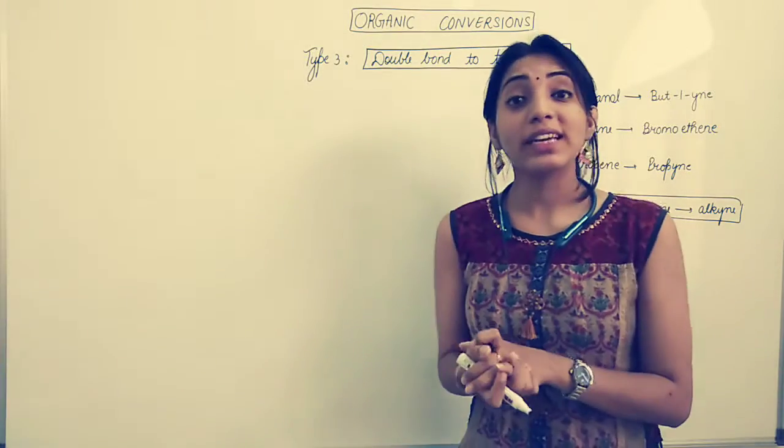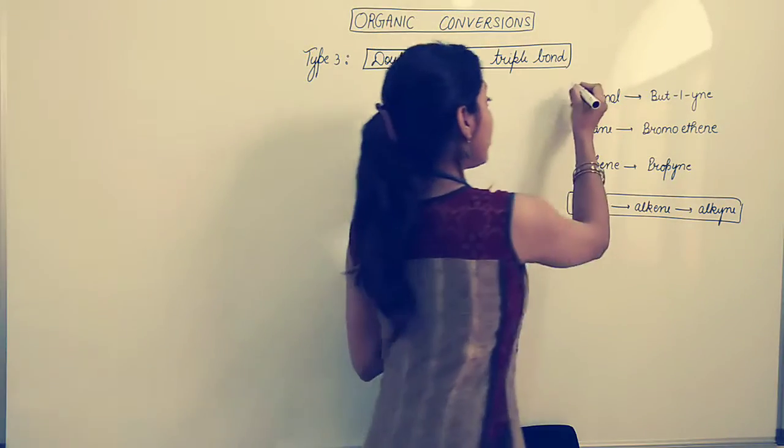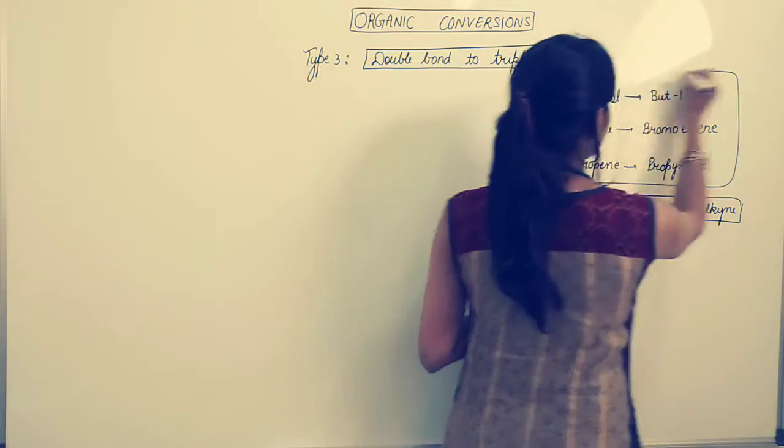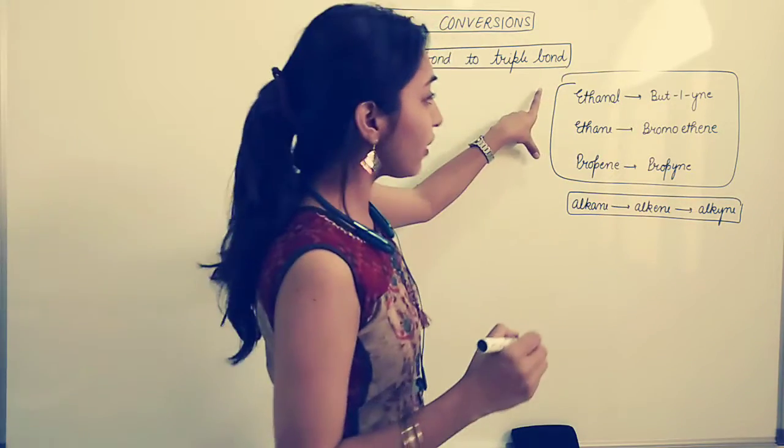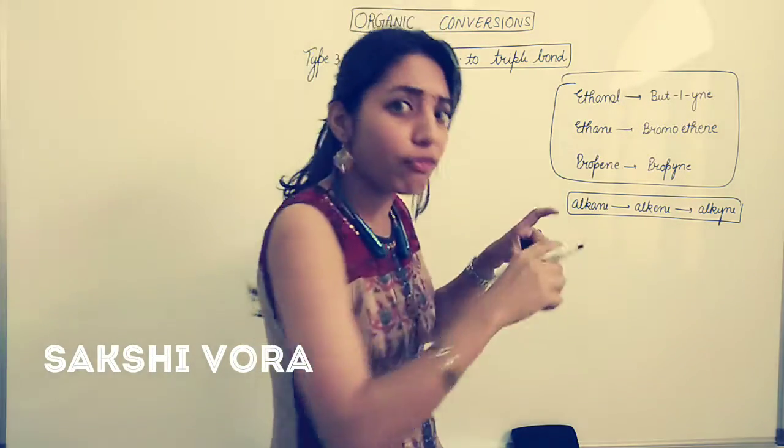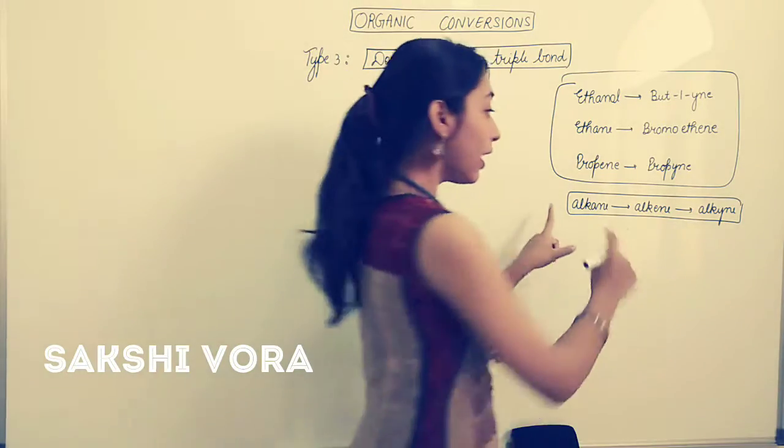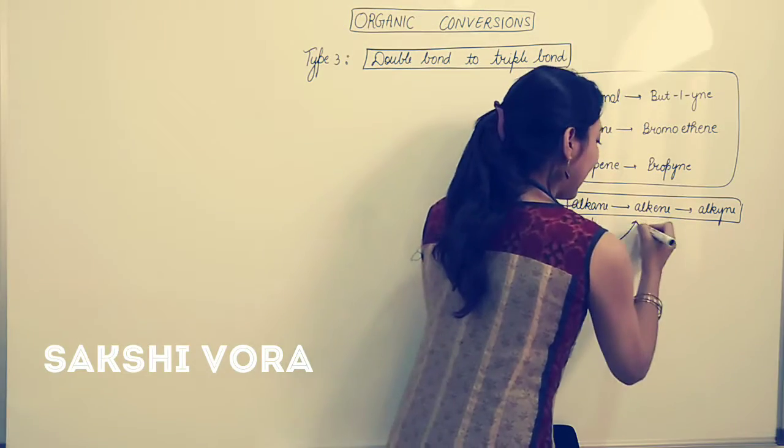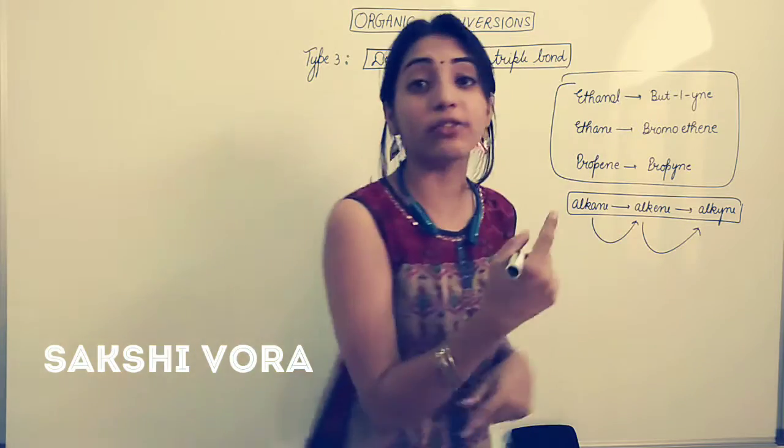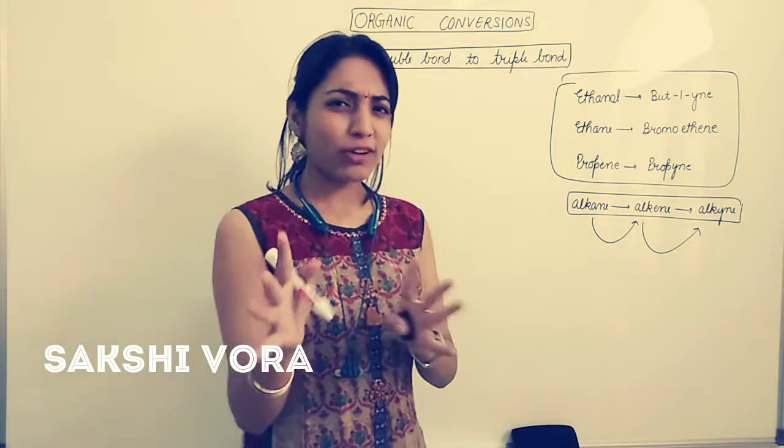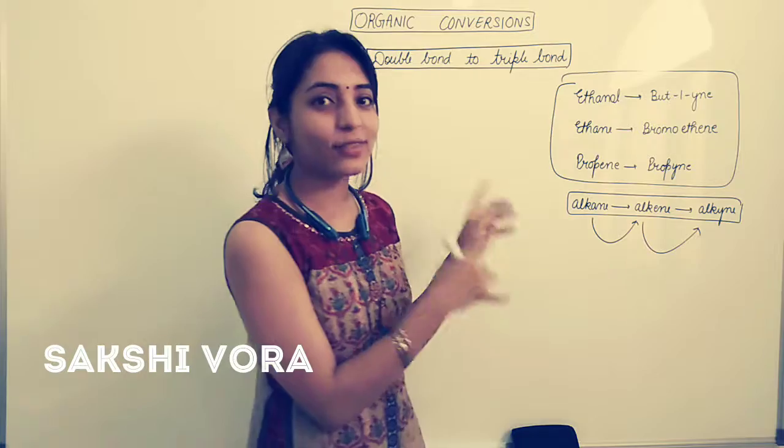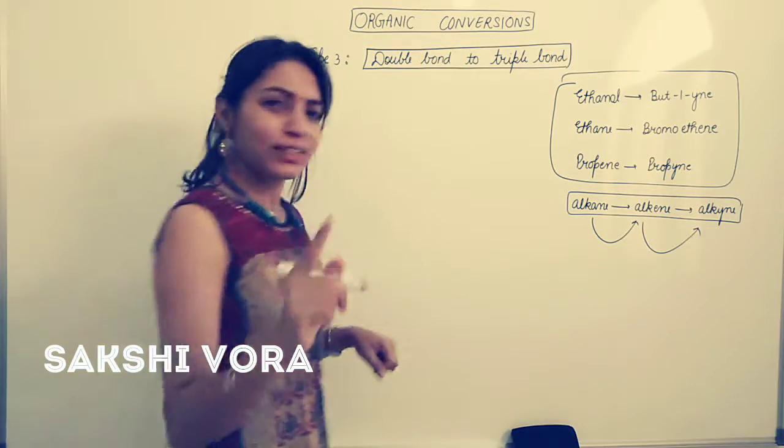In the chapter of haloalkanes and haloarenes, there are these three questions which have been asked. If I try to do this question in a wide range, so this is the main topic for today's lecture - how do you convert an alkane to an alkene, and how it could be converted to an alkyne. So without any further ado, let's quickly get started with the video.